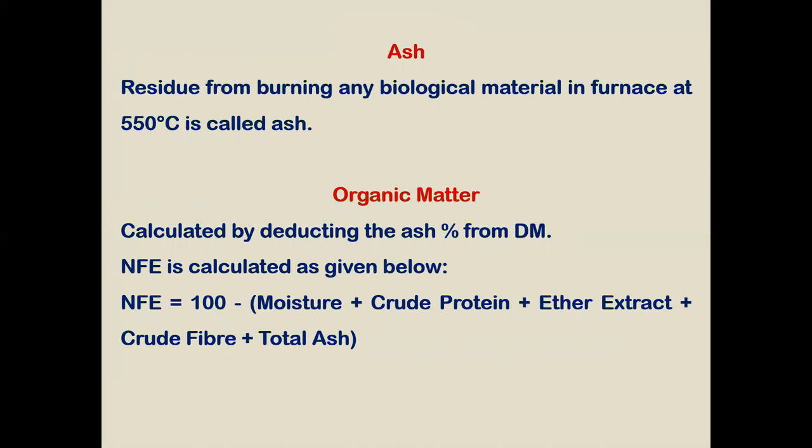Ash can be estimated in the laboratory after estimation of dry matter. We first decarbonize the sample by burning it on a heater or hot plate, then place this decarbonized sample in the muffle furnace, set the temperature to 550 degrees centigrade, and burn it. After some time, we retrieve the sample, keep it in a desiccator for cooling, and by that way we can know the inorganic component of the feed.